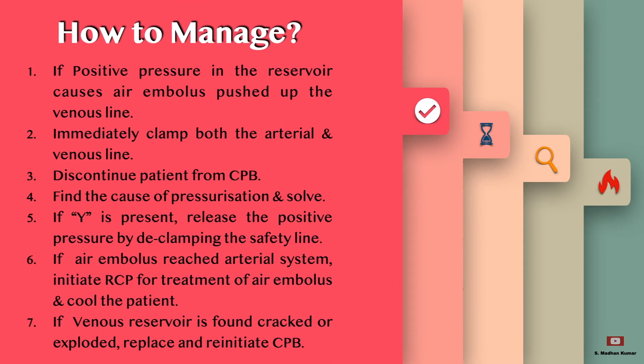How to manage when over-pressurization happens in the venous reservoir: if positive pressure in the venous reservoir causes air embolism pushed up to the venous line, causing massive air embolism in the right side of the heart, or a post-cannula situation on the arterial side also — immediately clamp both the arterial and venous lines, discontinue CPB from the patient, and first find the cause of pressurization and solve the problem.